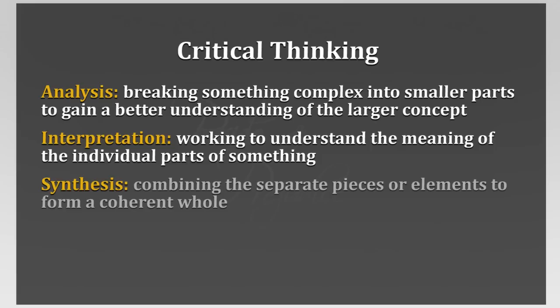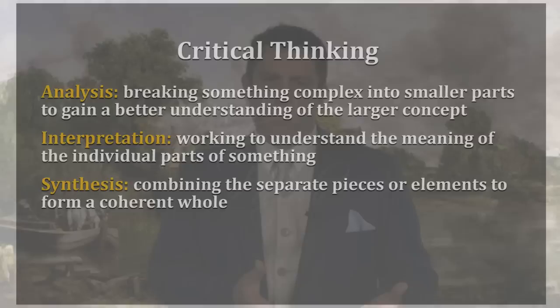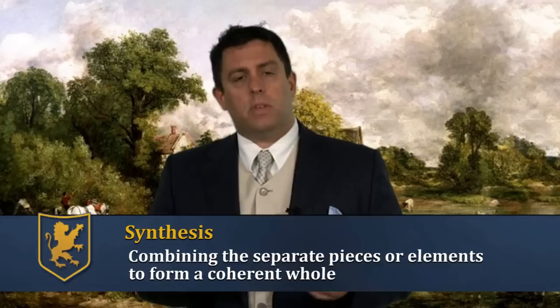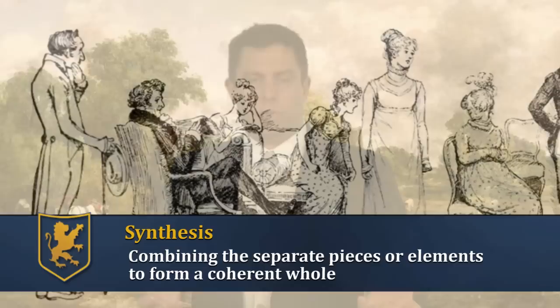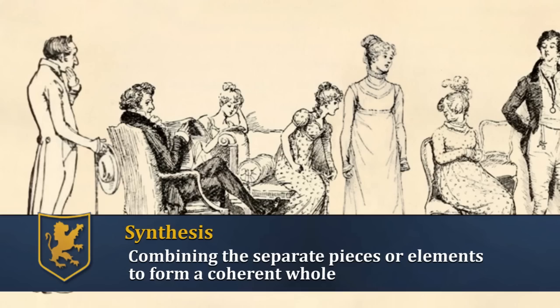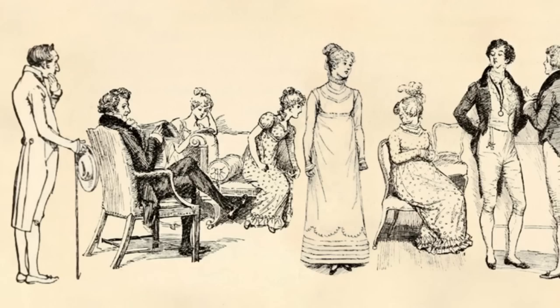The third stage of critical thinking is synthesis. In synthesis, we have looked at all the individual parts, and now we bring them together to see how they fit together. For instance, in mathematics, we might have interpreted how a certain function works, and then we take that function and fit it with another function to come up with a brand new thing — the way these two functions work together. The same thing happens in literature. When we have looked at individual characters, themes, or symbols and understand them in their larger context, we bring them together. How does Darcy fit with Mr. Collins? How does Mr. Collins become a foil for Darcy? Or how does Wickham?